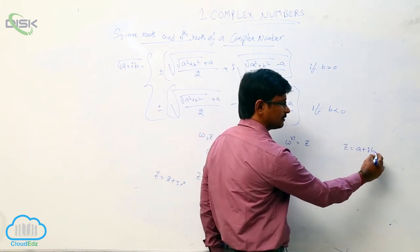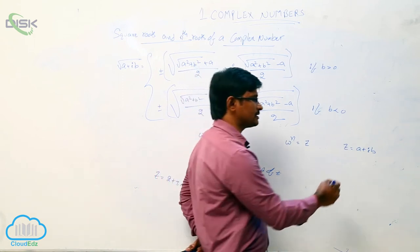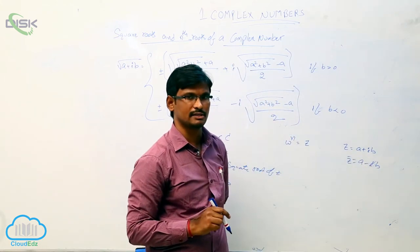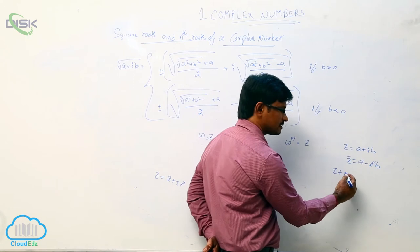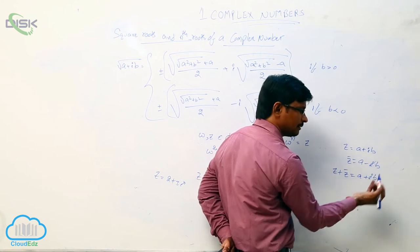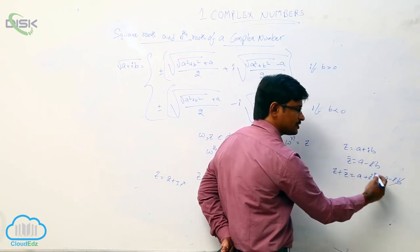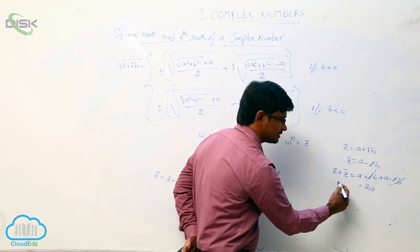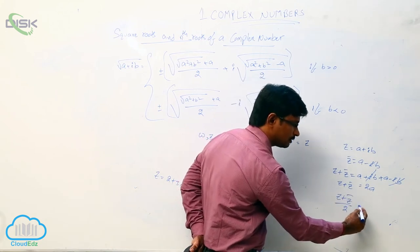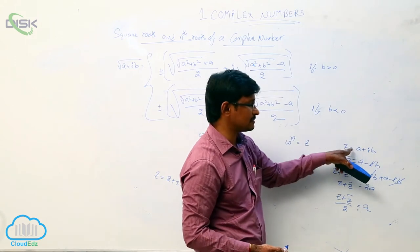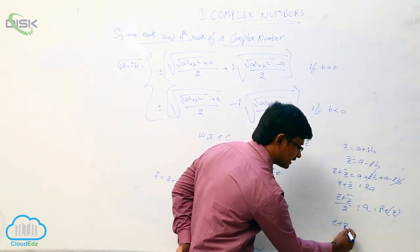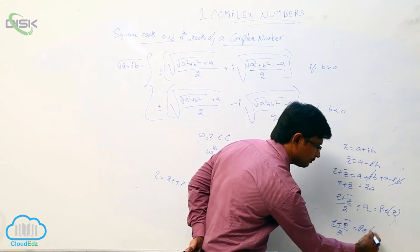Now, Z equals A plus iB and its conjugate Z̄ equals A minus iB. What is the relation between these two? Z plus Z̄ equals A plus iB plus A minus iB. The imaginary parts cancel, giving 2A. So Z plus Z̄ by 2 equals A, which is the real part of Z.